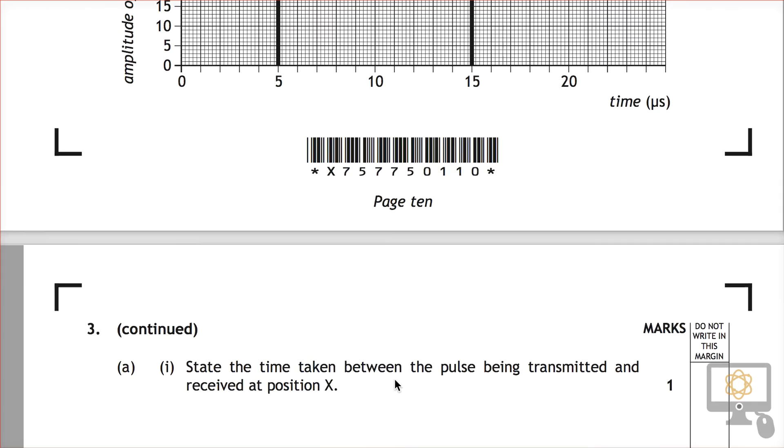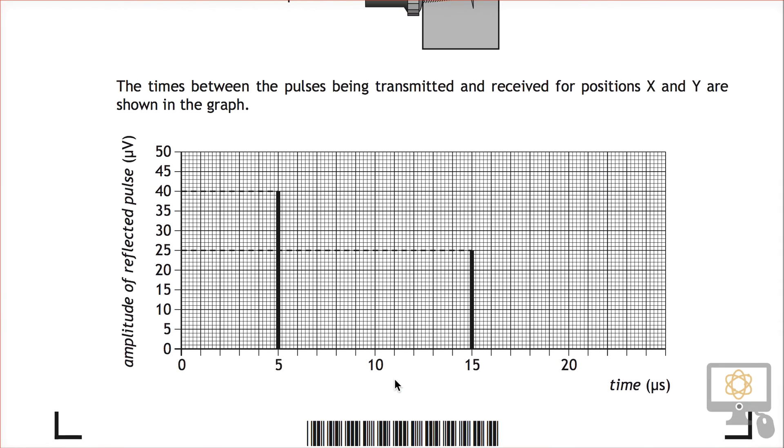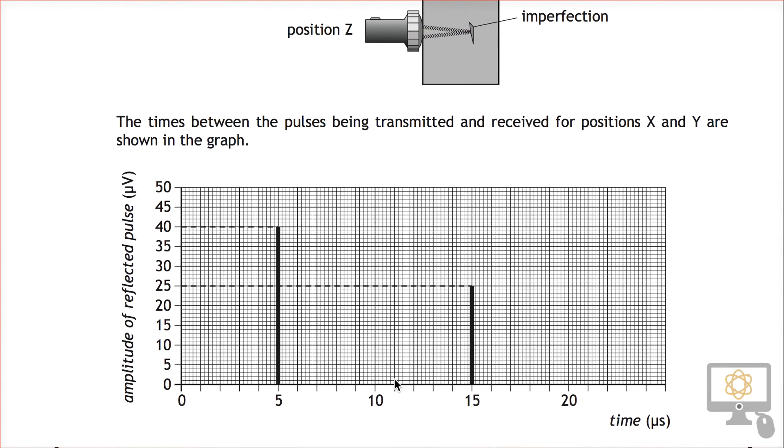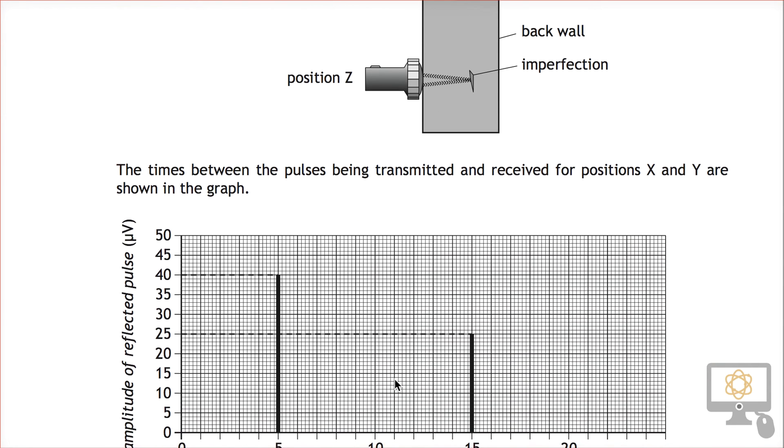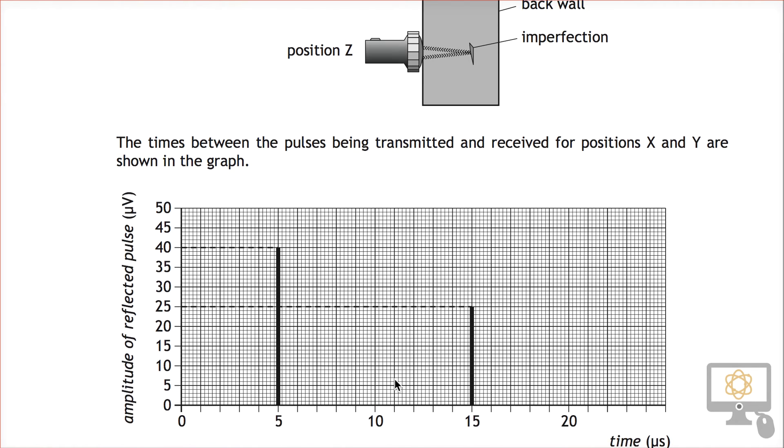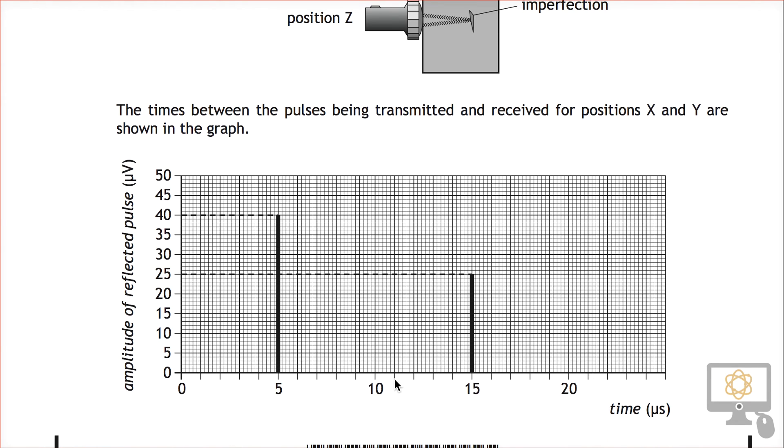So let's have a look at the graph on the previous page. It's this graph and that graph relates to this diagram up here and we're trying to annotate the graph. It says to draw a line to represent the reflected pulse from position z.